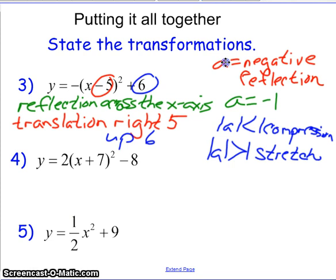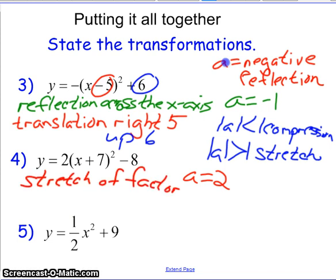For problem number four, A is two. It is not negative. That means there is no reflection. Its absolute value of two is greater than one. So that makes it a stretch. So it is a stretch of factor two. I wouldn't necessarily expect you to write factor two, but I want you to be used to seeing that terminology.